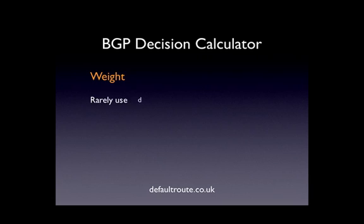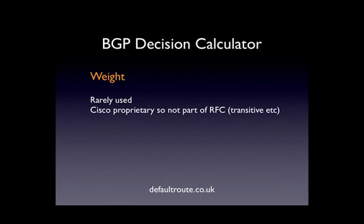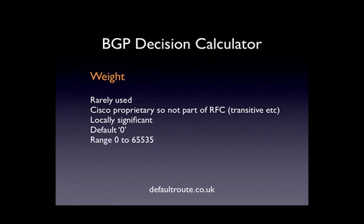So let's cover these off briefly again. Weight — rarely used, Cisco proprietary, not part of RFC. It doesn't cover transitive, non-transitive, well-known, or optional attribute properties. It's locally significant only on the box you configure it on — it's not sent anywhere else in your autonomous system. The default value is zero, and the higher the value, the better. The range is from zero to 65,535.